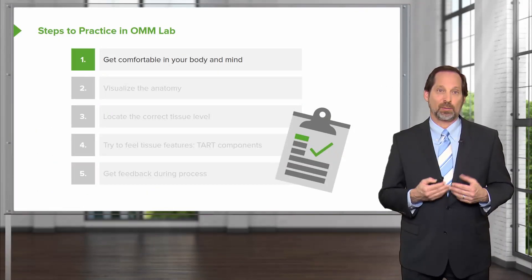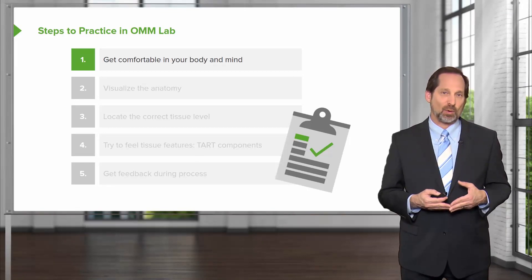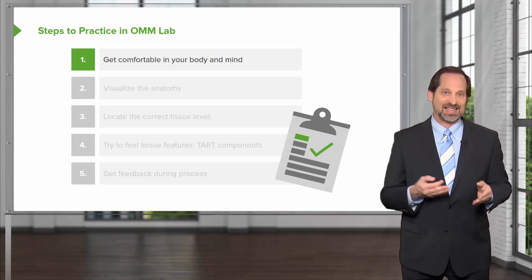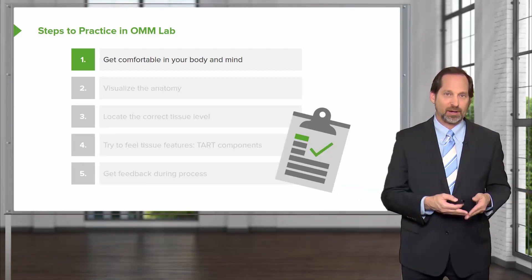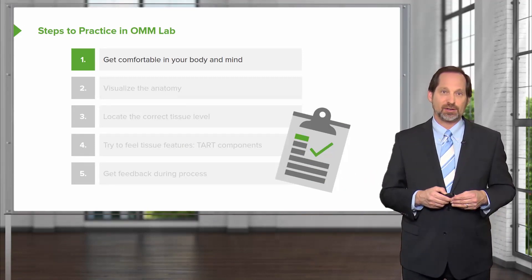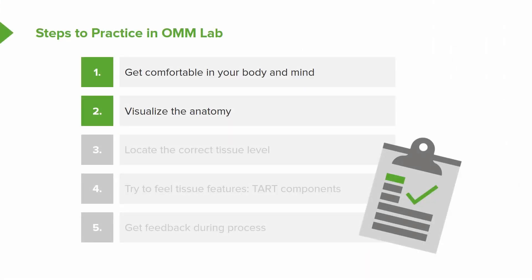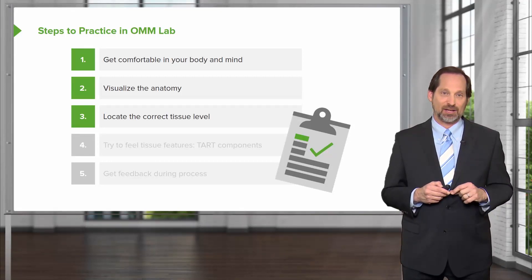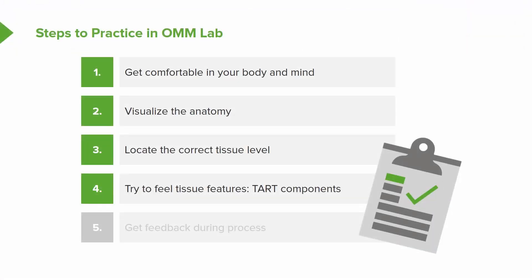In OMM lab, it is important that we get access to the tissues being treated. People should not wear tight-fitting clothes that would limit palpation or our ability to comfortably move them or assess extremes of motion. Know when someone is hitting a physiologic barrier versus an anatomic barrier — can you take them past an anatomic barrier, or will clothes limit your activity? Visualize the anatomy you're touching. Locate the correct tissue levels; if you're going for the cervical or thoracic spine, you can start a level above or below before reaching the problem area so you don't jump directly into where the pain is. Note the tissue texture, put it in the chart, and get feedback from the patient during the process if anything is uncomfortable or needs explanation.